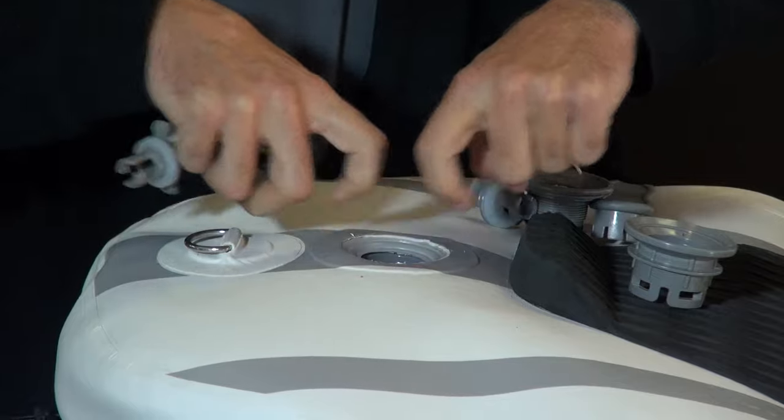The ISEP valve could leak for several reasons. One, there could be debris in there. Two, it could just be cracked and broken or the PVC could be stretched out.